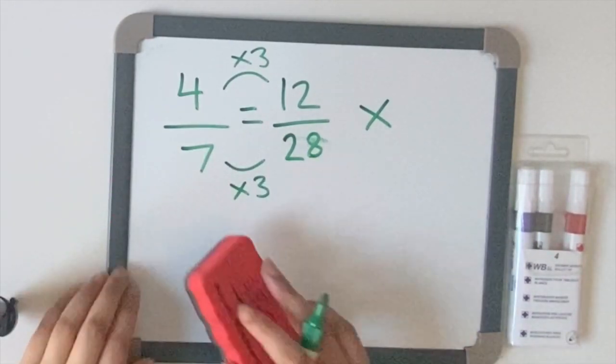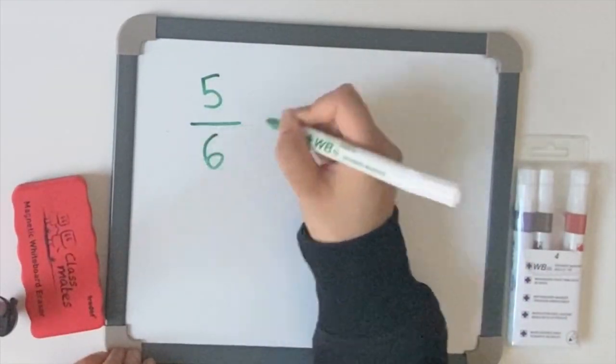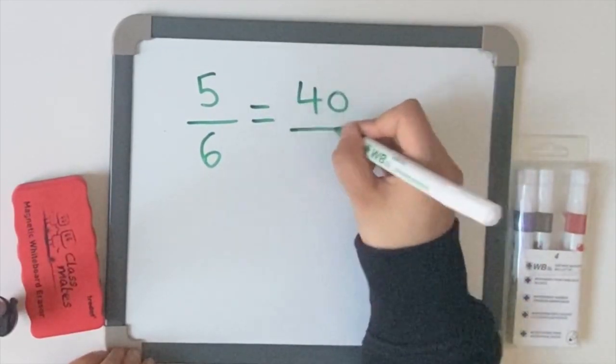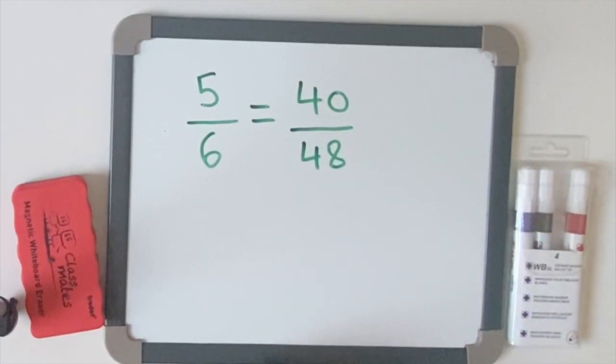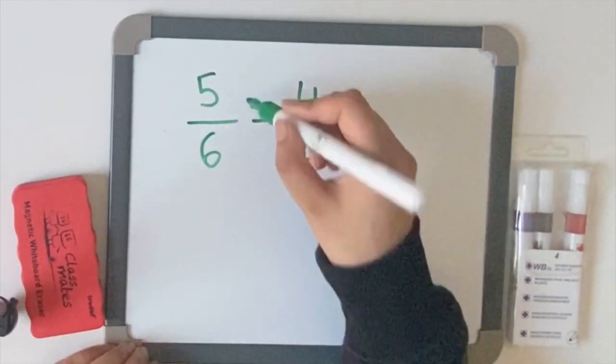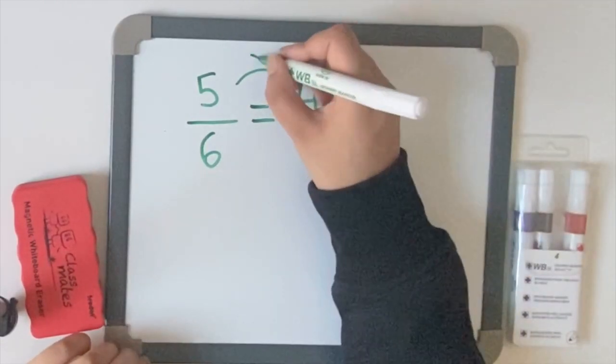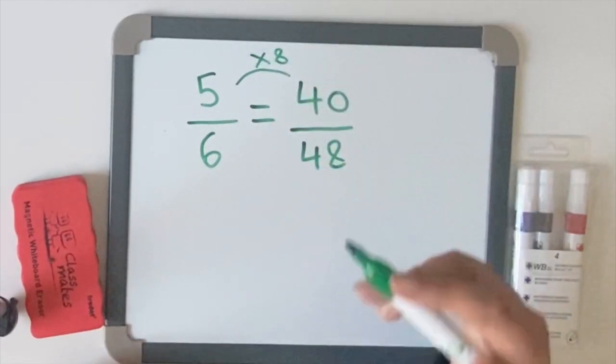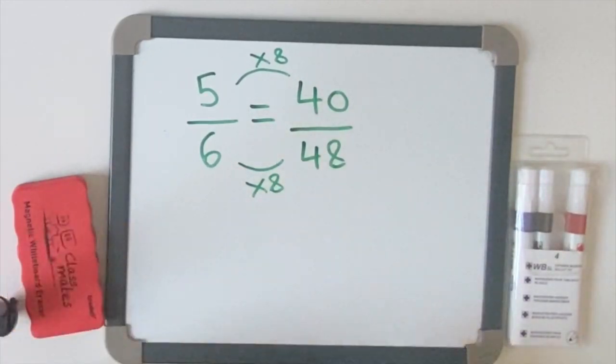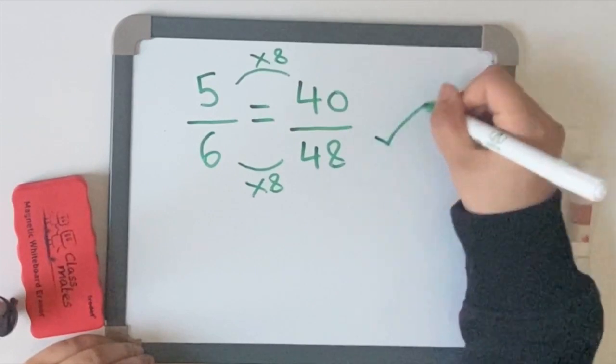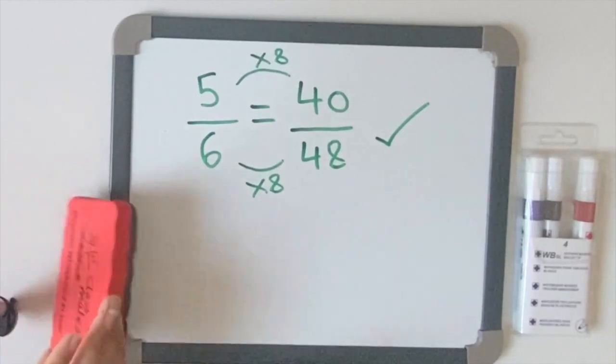Let's have a look at another example. The second one is five sixths. Is that equivalent to forty forty-eighths? If you're feeling confident, pause the video and have a go on your own. But if you're still slightly confused and want more information, please continue watching. So let's have a look at how many times five goes into forty. Five, ten, fifteen, twenty, twenty-five, thirty, thirty-five, forty. It goes into it eight times. Now what's the rule again? What you must do to the top, you must do to the bottom. Six times eight. Well let's have a look. Six, twelve, eighteen, twenty-four, thirty, thirty-six, forty-two, forty-eight. Brilliant. Yes, it does go in. So that is an equivalent fraction. Well done if you got it right.